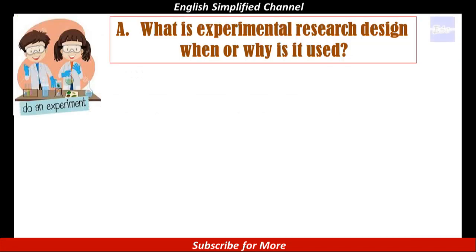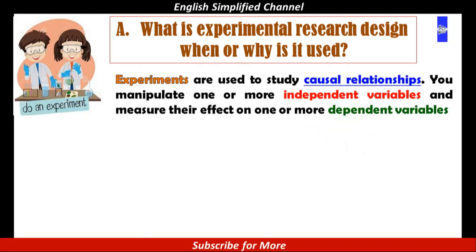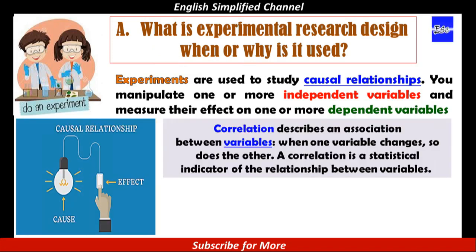Part A. What is experimental research design, when or why is it used? Experiments are used to study causal relationships. You manipulate one or more independent variables and measure their effect on one or more dependent variables. What is meant by causal relationship? Correlation describes an association between variables — when one variable changes, so does the other. A correlation is a statistical indicator of the relationship between variables.